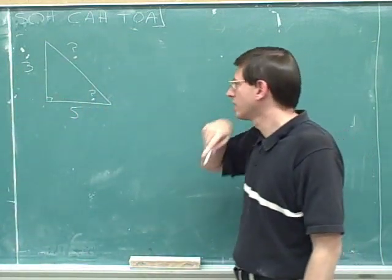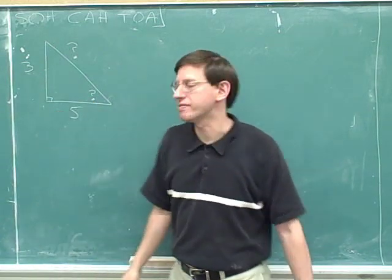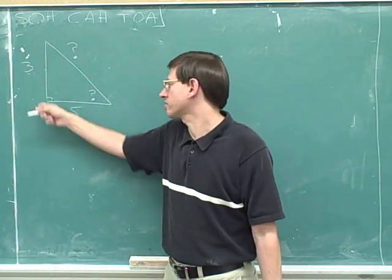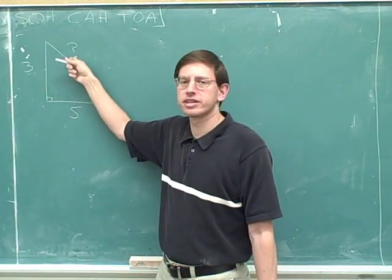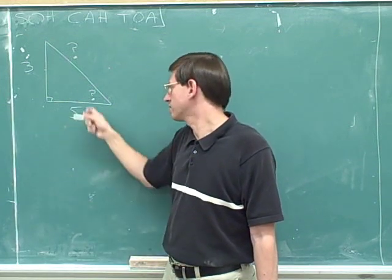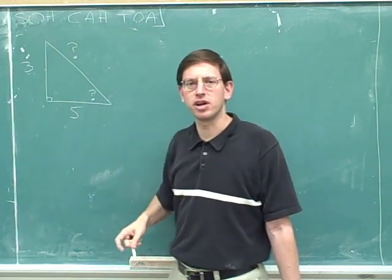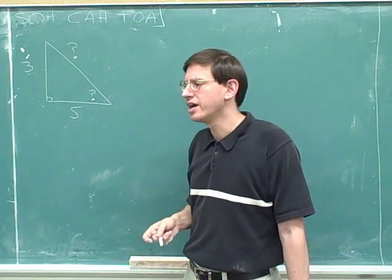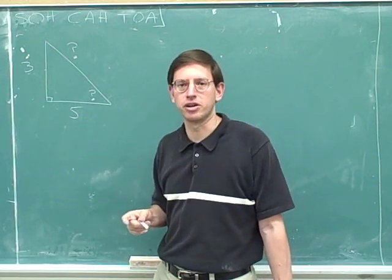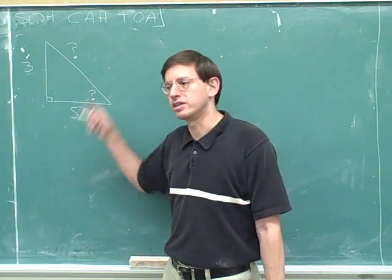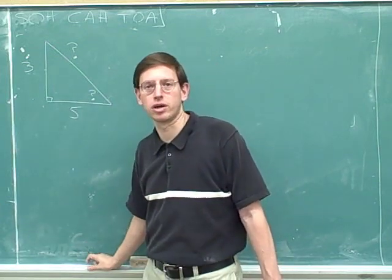Here's a right triangle where the length of one side is three and the length of another side is five. Please figure out how big is the marked angle and how long is the remaining side — the question marks indicate what we need to find. Please pause the video and give that a shot. However, this problem involves some techniques we haven't gone over yet, so if you get stuck, just start the video again and we'll go through it together.